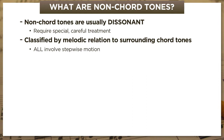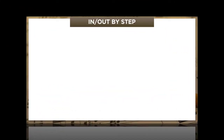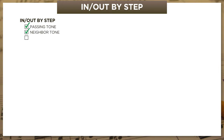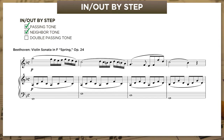Our next job is to get to know six additional types and how they move. There are three types we move into and out of by step—we've seen two already: passing and neighbor tones. The third is the double-passing tone. Consider the opening of Beethoven's Fifth Violin Sonata, the Spring Sonata. Notice how slowly the chords move, but how much rapid stepwise motion the melody uses—this guarantees many non-chord tones, since chord tones don't usually lie a step apart.